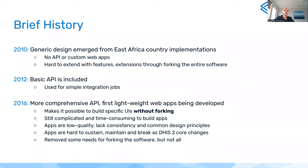Over the years we invested more in the API. By 2016 a more comprehensive API came out, and we started seeing the first lightweight web apps being developed. That meant people could build specific UIs without forking. The problem was it was still complicated and time-consuming — people picked jQuery or Angular or whatever framework they knew, apps looked completely different from each other, with no consistency or common design principles, fairly low quality, and things broke whenever DHIS2 changed something.